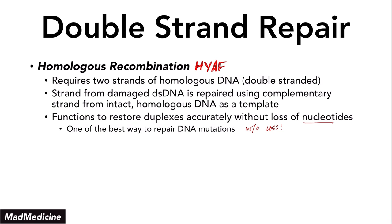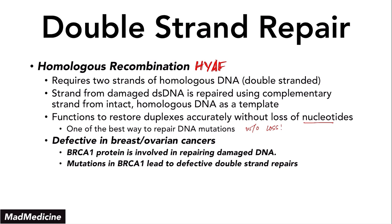Certain cancers can develop if homologous recombination is defective — for example, breast and ovarian cancers. We know that the BRCA1 gene is involved in repairing damaged DNA. Mutations in the BRCA1 gene lead to defective double-stranded repair because it is the homologous recombination process that is defective. The BRCA1 gene is responsible for homologous recombination, especially in breast and ovarian tissues. Issues with the BRCA1 protein mean issues with this whole process, and that's how people develop breast and ovarian cancers.